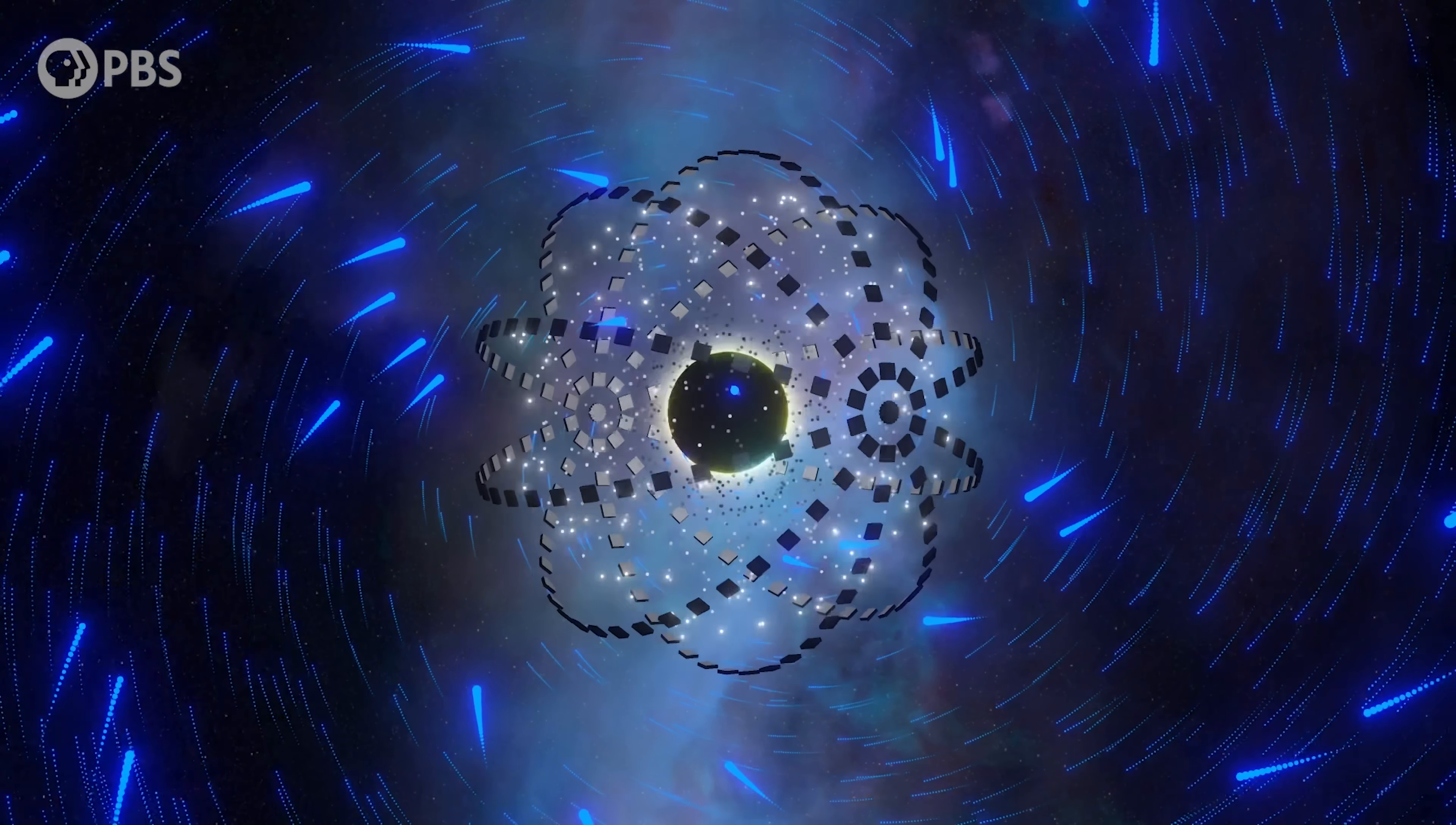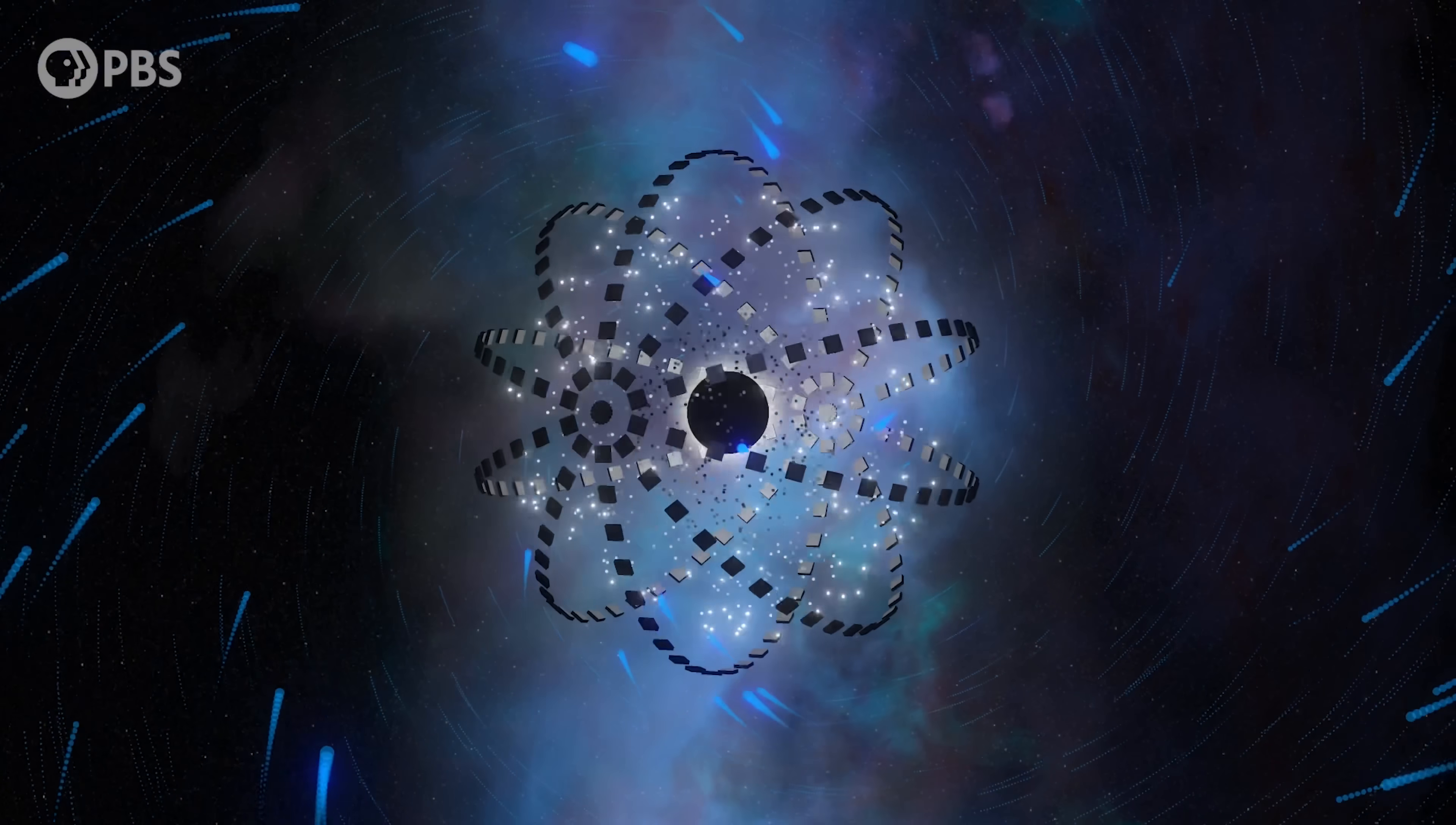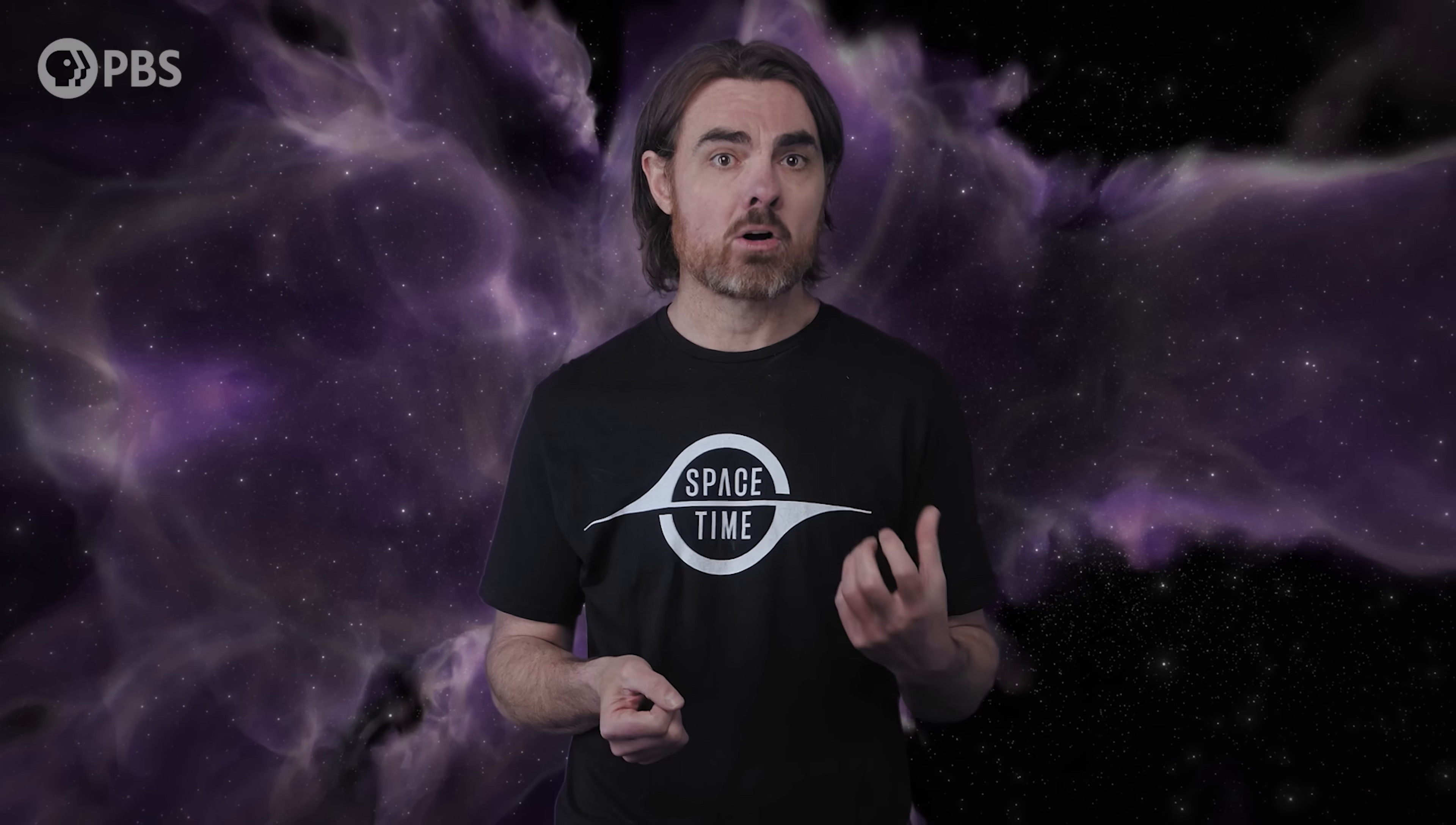But after about 100 billion years or so, the universe has expanded enough to dim the CMB below the temperature of the black hole, and finally Sagittarius A-star starts to shrink, assuming it doesn't eat anything else. Bob is aware that the black hole will eventually completely evaporate through this radiation.